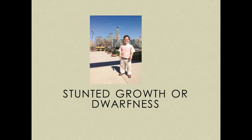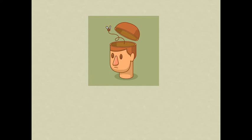Stunted growth or dwarfness means ponapan. Morone or mentally challenged means mand buddhi.